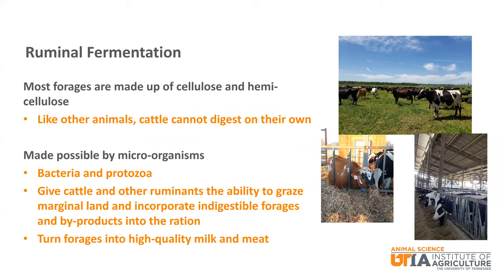Most forages are made up of cellulose and hemicellulose. Cattle, like other animals, are not able to digest these complex carbohydrates on their own. The ruminal fermentation is made possible by the rumen microorganisms. They give cattle and other ruminants the ability to graze land or ingest byproduct feeds that are not well suited for anything else and turn the forages into high quality milk and meat. A former college professor of mine used to call them biological bush hogs.